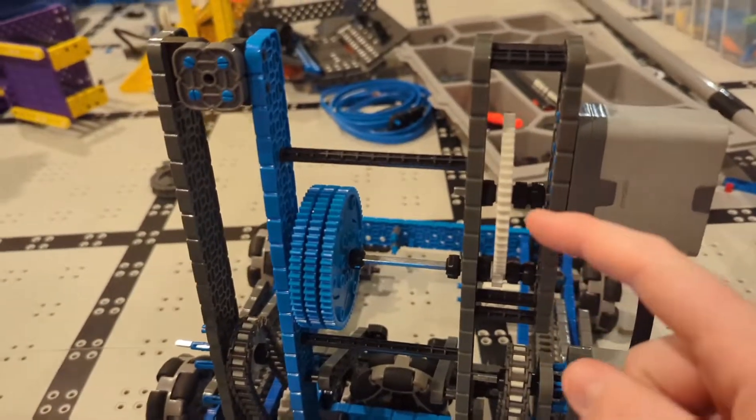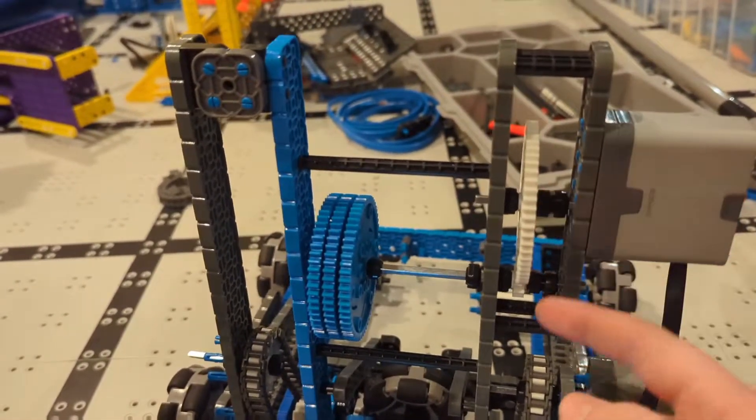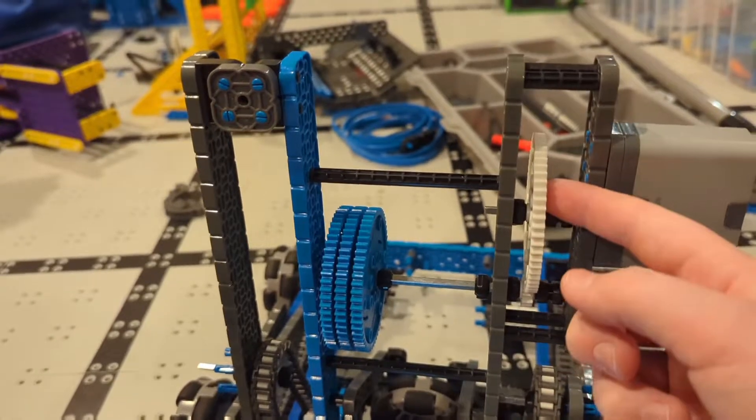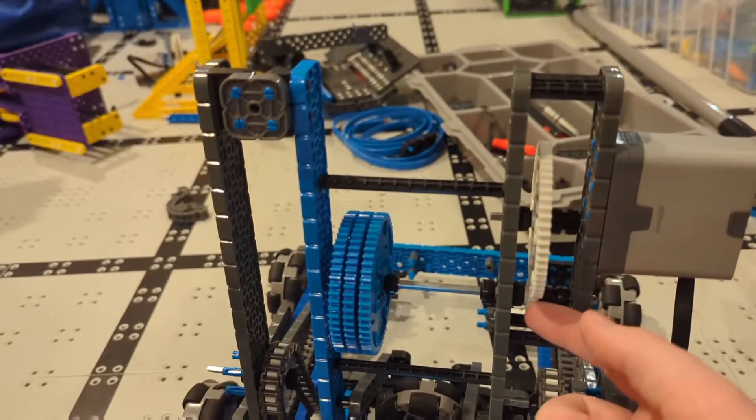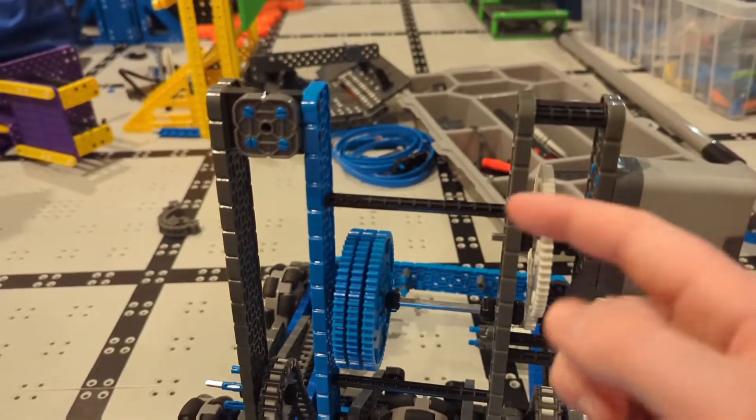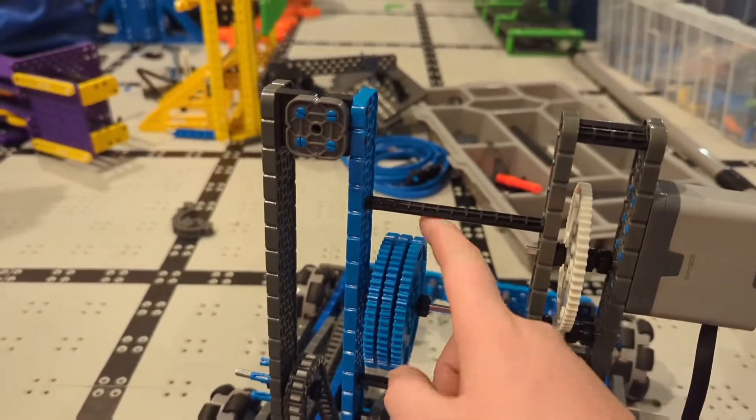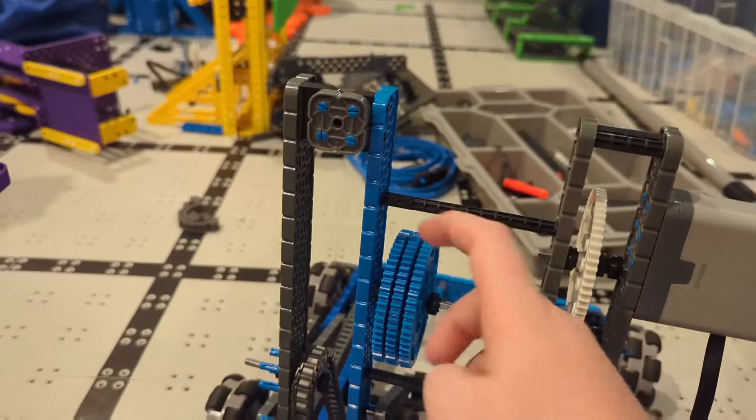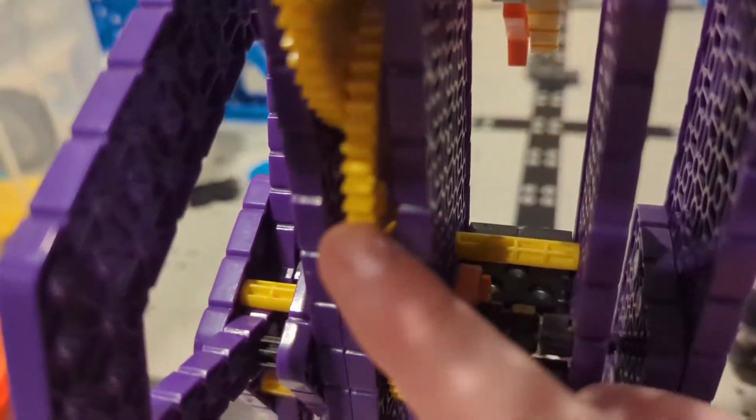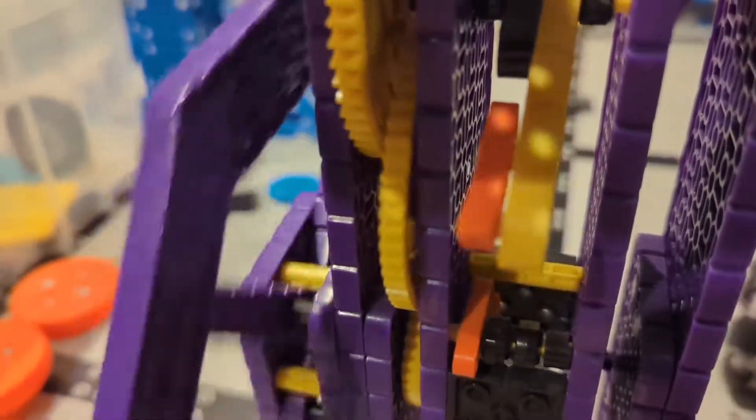Okay, so how this works is we have this motor going into this big gear, which goes into this small gear. Because if you put a big gear into a small gear, it creates more speed. And then it goes into these little gears here, and they spin the gears on the purple dispenser here. It spins this one, and it's really, really fast.